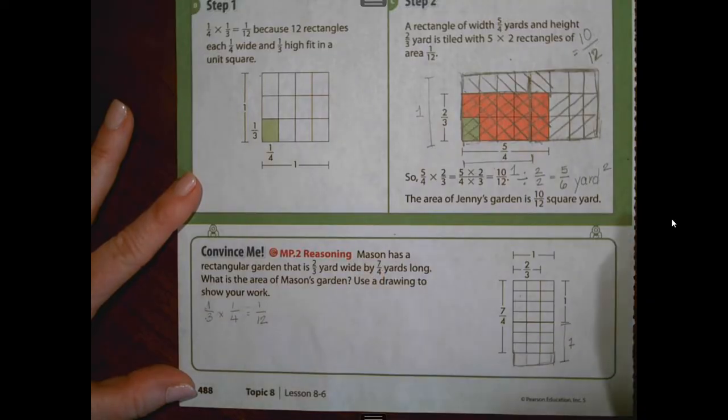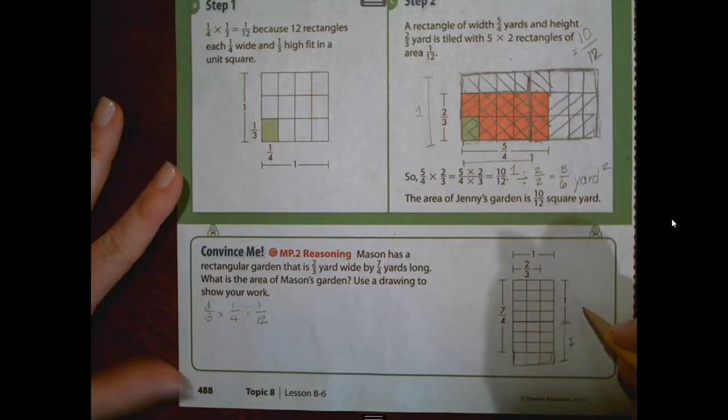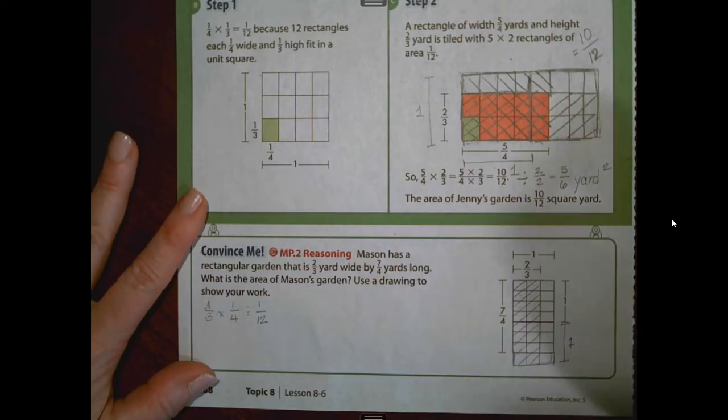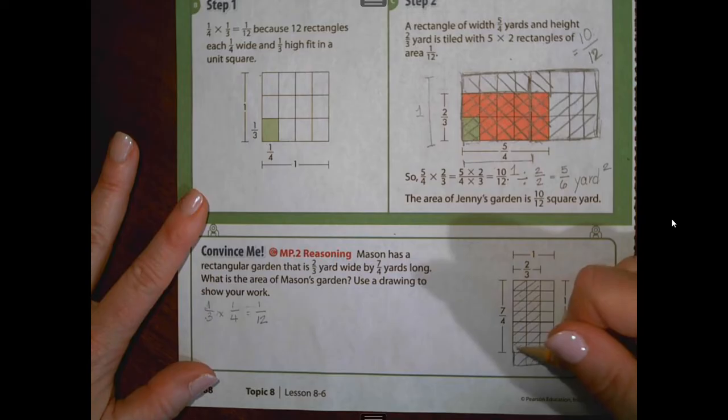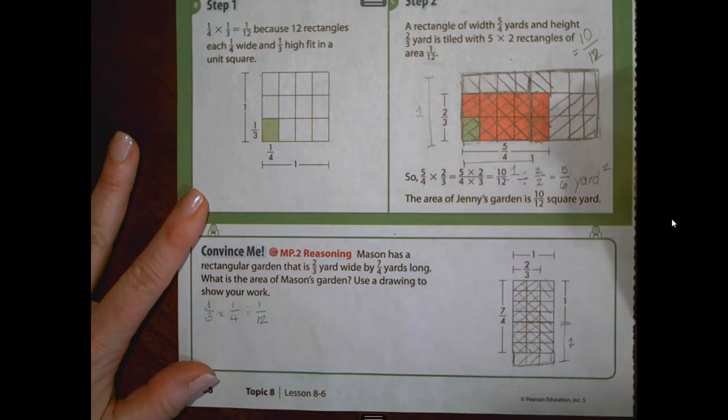So if we were to work with it, two-thirds times seven-fourths. So we would shade the two-thirds one direction. You're going to shade your seven-fourths another direction. So we're going to go down to the seven area. And what I see are two, four, six, eight, 10, 12, 14 shaded areas.